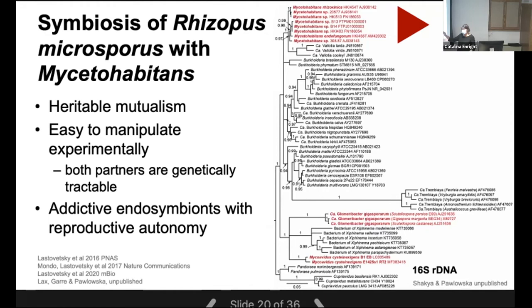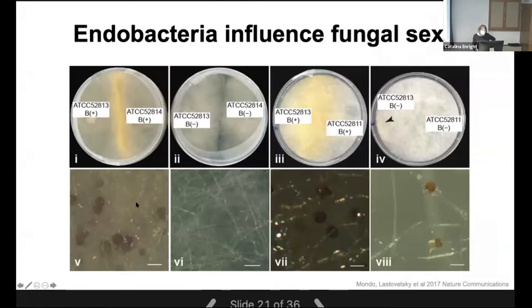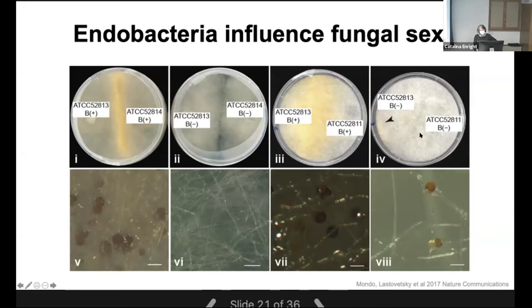Mycetohabitans manipulates fungal reproductive biology. Stephen demonstrated this by mating compatible isolates with bacteria — they mated gloriously, showing an orange line of beta-carotene accumulation and zygospore formation. But when Stephen cured the fungi of bacteria, they would not mate. Another set of isolates mated fine with bacteria, but with much less vigor when bacteria were removed. We concluded the bacterium is important and the fungus is addicted to it, because as soon as bacteria are reintroduced, the fungus resumes reproductive activity.